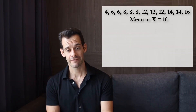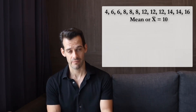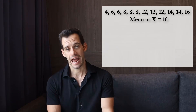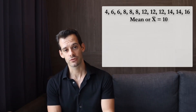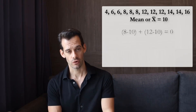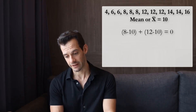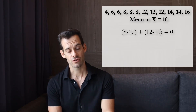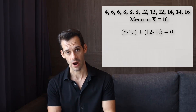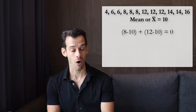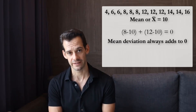At first glance when thinking about finding the average deviation from the mean, we might think we can just take the distance from each score to the mean, add those up, and divide by the number of scores. But we'll run into a problem because we have positive and negative values. A score of 8 is minus 2 from the mean and a score of 12 is plus 2. If we treat these as −2 and +2, they'll just cancel each other out. And actually all of our scores will cancel each other out because the mean is the balancing point of the distribution.